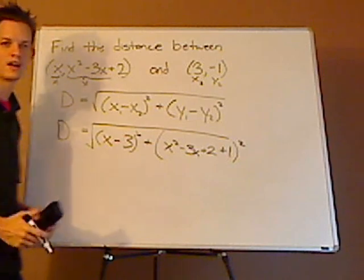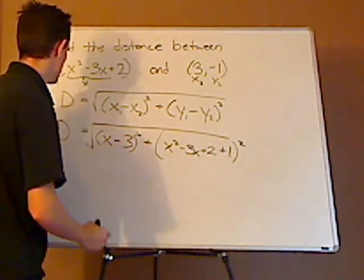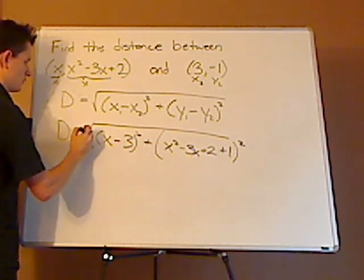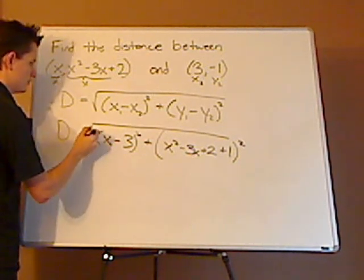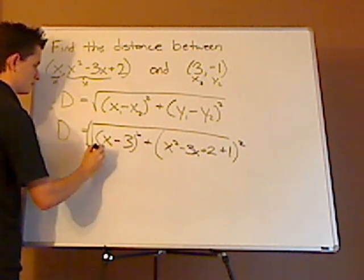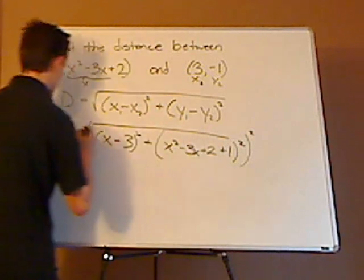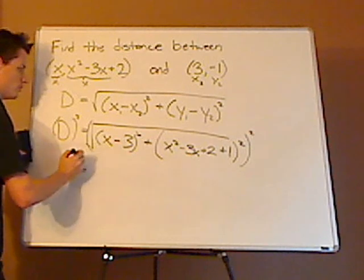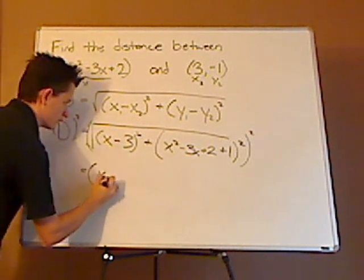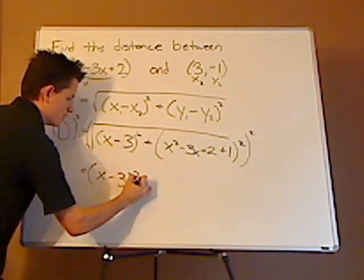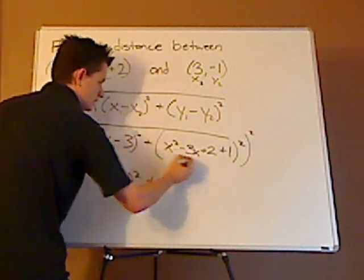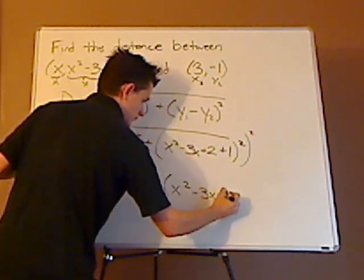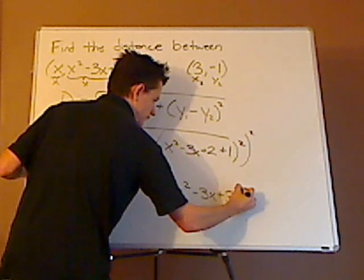Now what I can do is I can kind of play a trick. What I'll do is I'll square both sides. I know I have to minimize this, but what I can do is I can minimize distance squared and not lose anything. So this is x minus 3 squared plus, and this simplified inside is x squared minus 3x plus 3 squared.